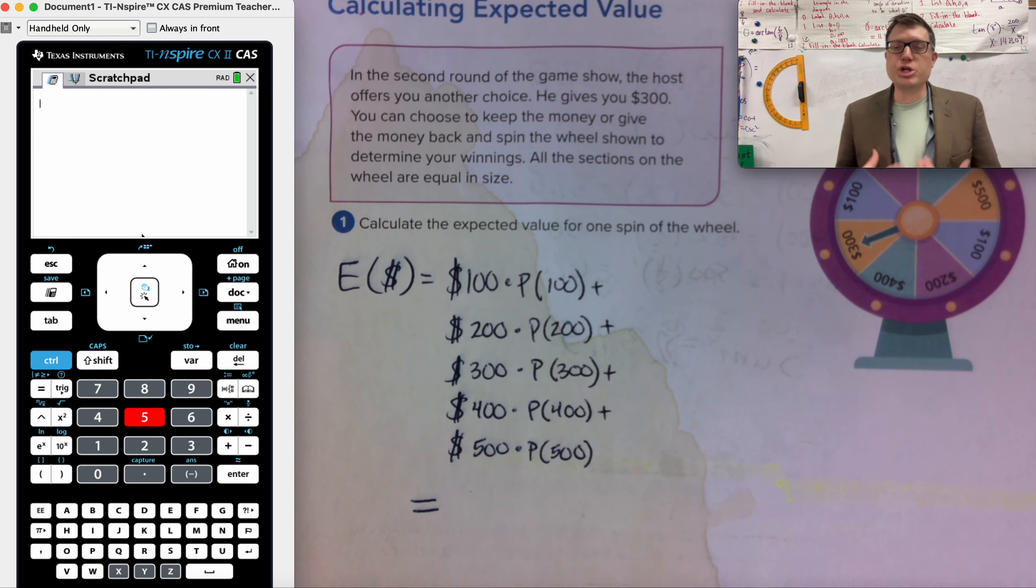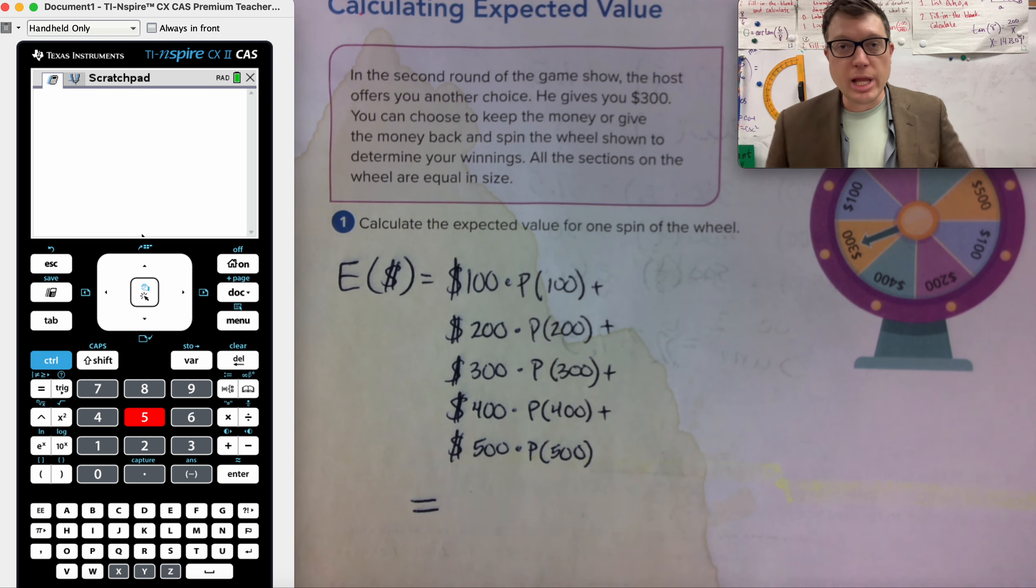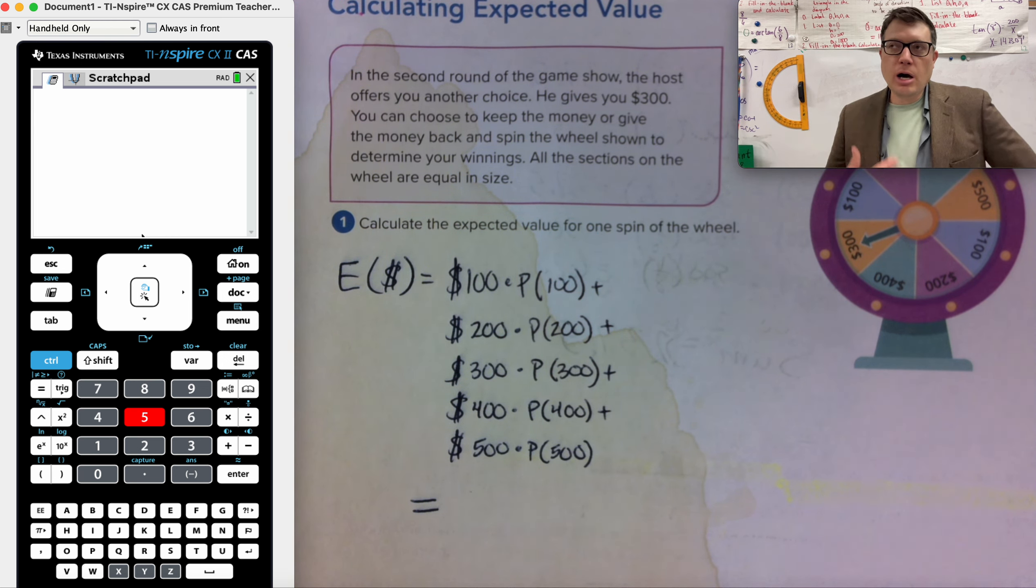We are on activity three and we're changing the expected value like winnings, right? So as the parameters of our situation change from $200 to $300, then our expected value is going to change also, or what we do with that amount is what's going to change.